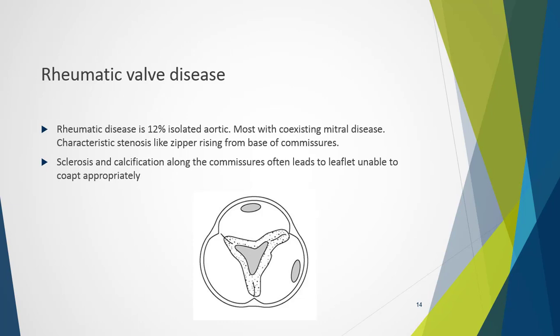Rheumatic aortic valve disease represents about 12% of isolated cases involving just the aortic valve; the most common form we see is coexisting mitral valve disease. This form of stenosis is different in that there is a characteristic zipper-like effect arising from the base of the commissures.